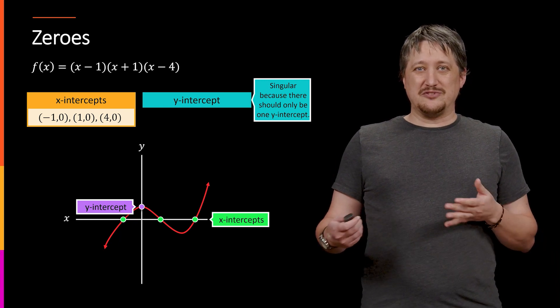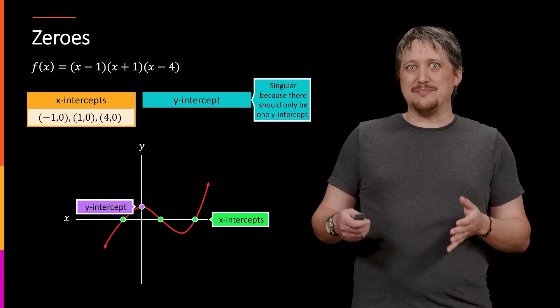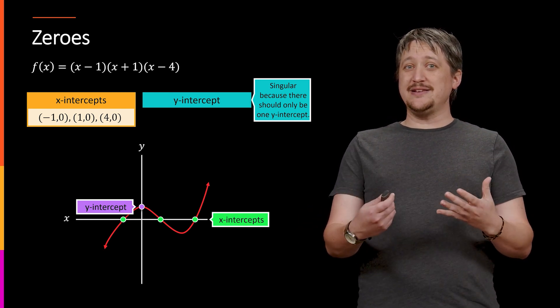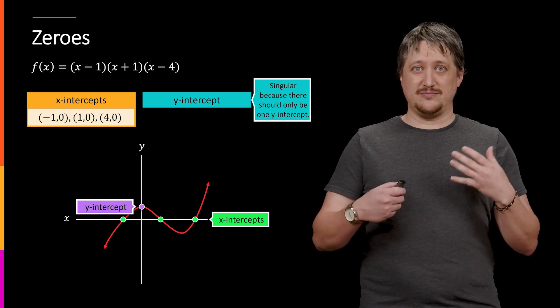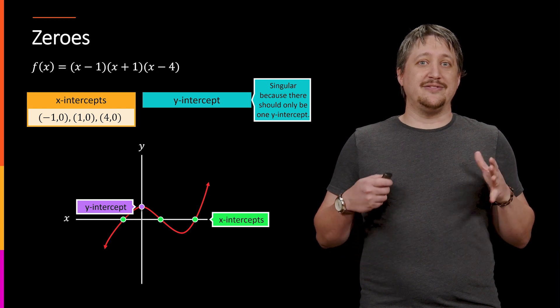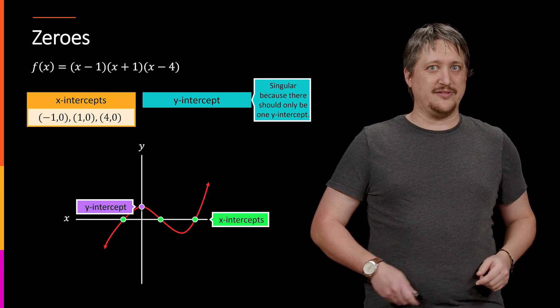In talking informally we sometimes gloss over that part and just say negative one, one, and four because it's understood what we mean. But keep this in mind when it comes to actually doing homework or on an exam. The x-intercepts are points, and that's important, so they need to be written as points.